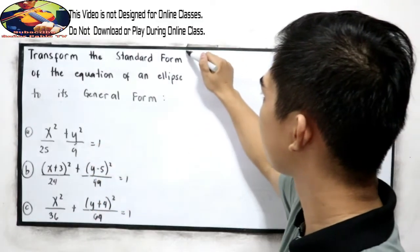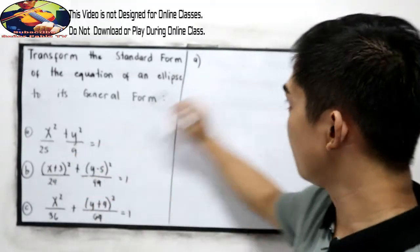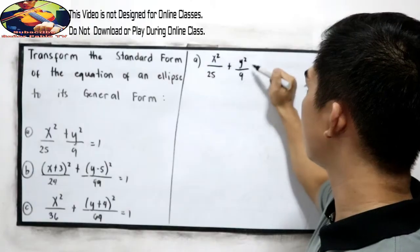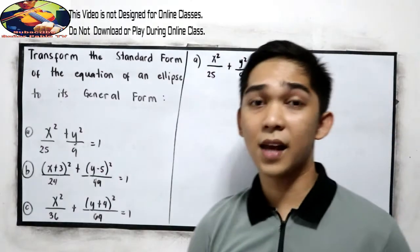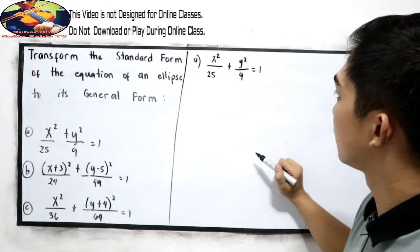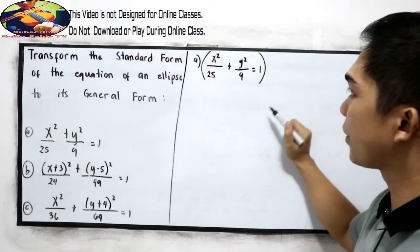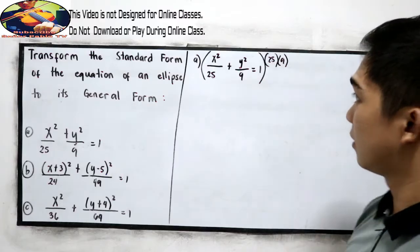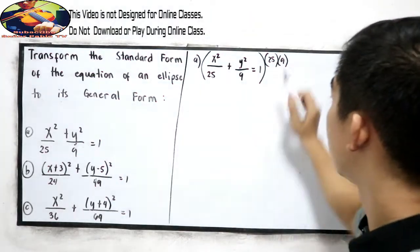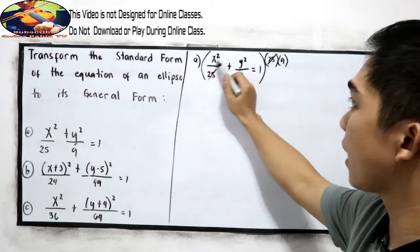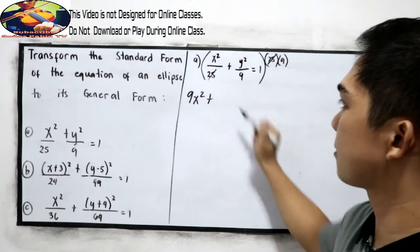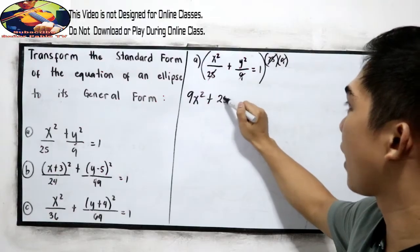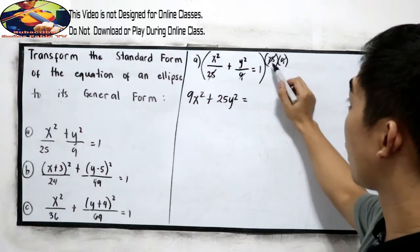Okay, let's begin letter A. Copy the given: x squared over 25 plus y squared over 9 is equal to 1. So we need to multiply our equation to 25 and 9 so that our denominator will be equal to 1. So this will be cancelled out. Then 9 times x squared, so we have 9x squared. Plus, in this case, 9 will be cancelled out.